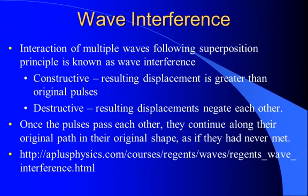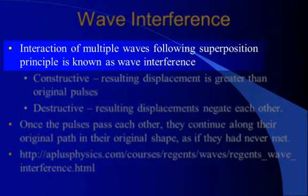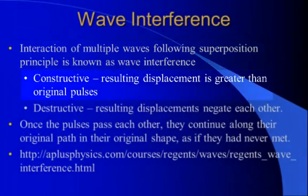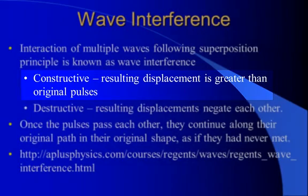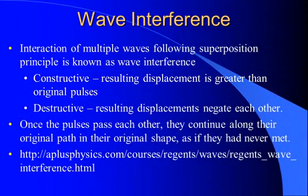Now, applying this to wave interference, the interaction of multiple waves following superposition principle is called wave interference. You can have two types. Constructive wave interference occurs when the resulting displacement is greater than the displacement of the original pulses. We just showed an example. We had a 5 centimeter displacement and a 10 centimeter displacement that added together to give us a 15 centimeter displacement. That's constructive interference.